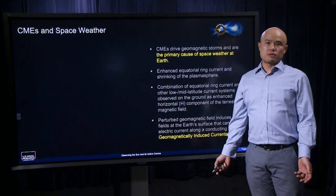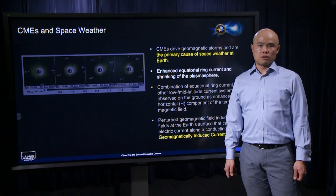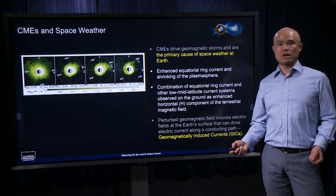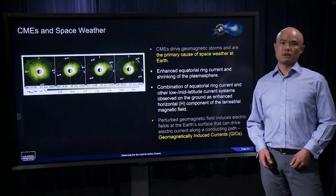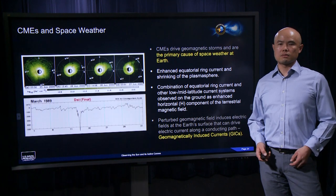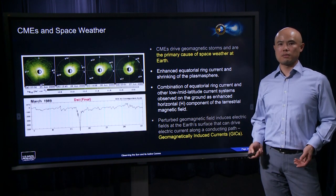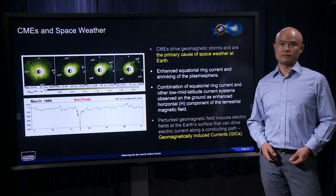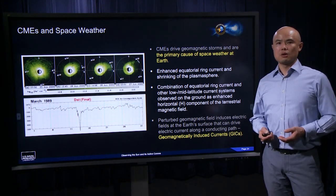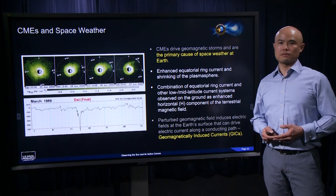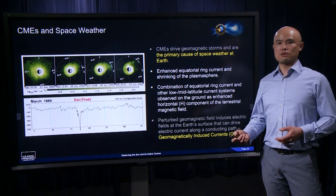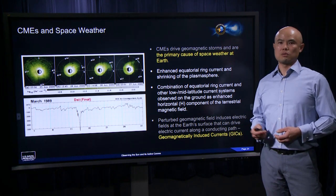CMEs are the primary cause of geomagnetic storms and space weather at Earth. Global-scale signatures of geomagnetic storms include the enhancement of a ring of current that flows around the Earth near the equator. This ring current, along with contributions from other storm-time current systems at low and mid latitudes, is observed on the ground as an enhanced horizontal component of the magnetic field. Recalling Faraday's law, changes to the geomagnetic field induce electric fields at Earth's surface, giving rise to the flow of electric currents along any conducting path — these are known as geomagnetically induced currents.